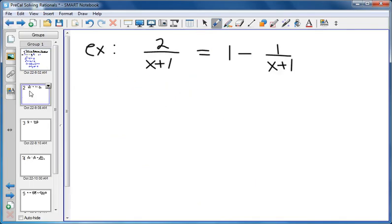Next up, we have two over x plus one equals one minus one over x plus one. Again we need to multiply by the common denominator. Well, the denominator shows up twice, but it is the same denominator both times. So we multiply everything by x plus one.